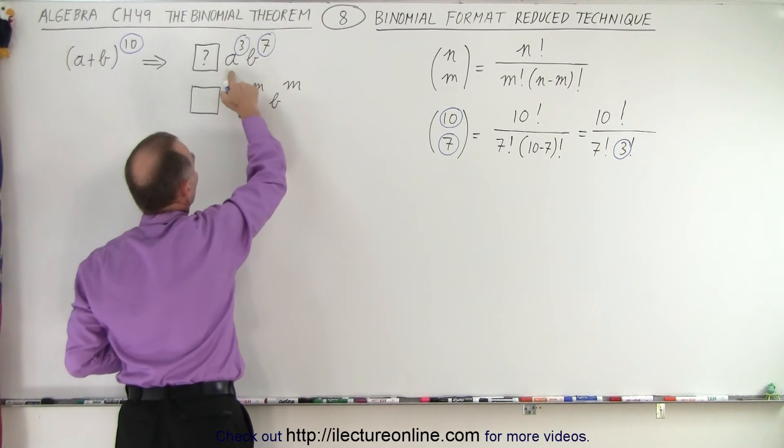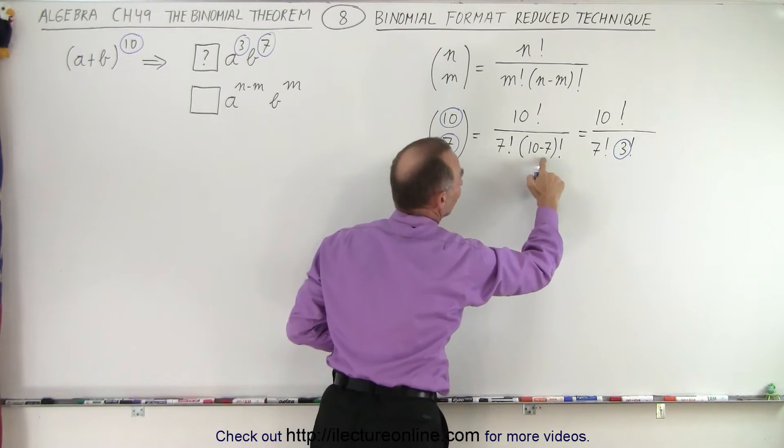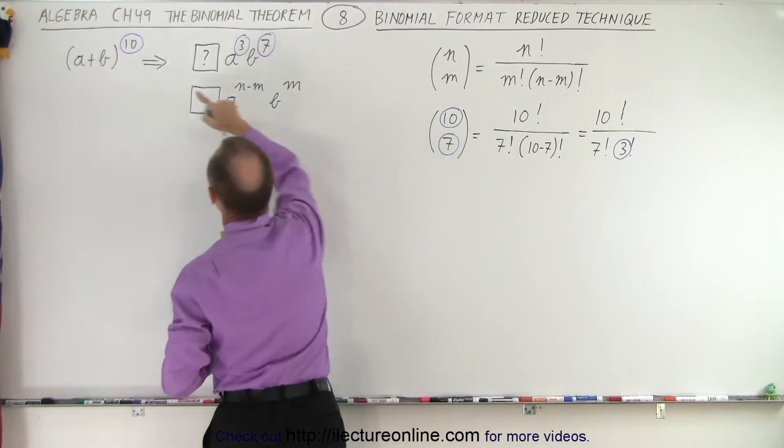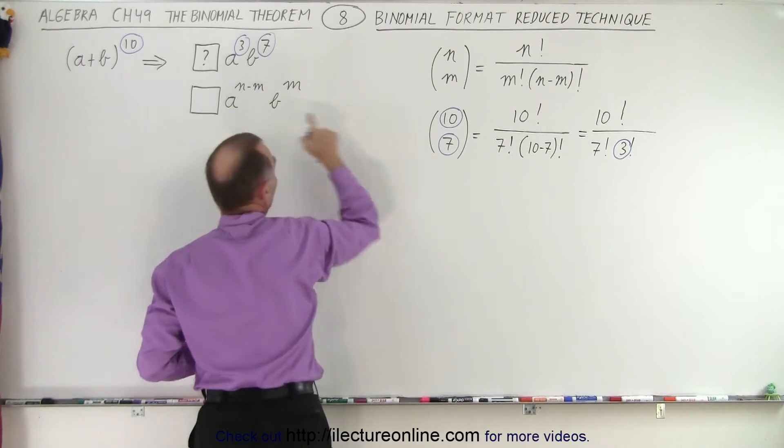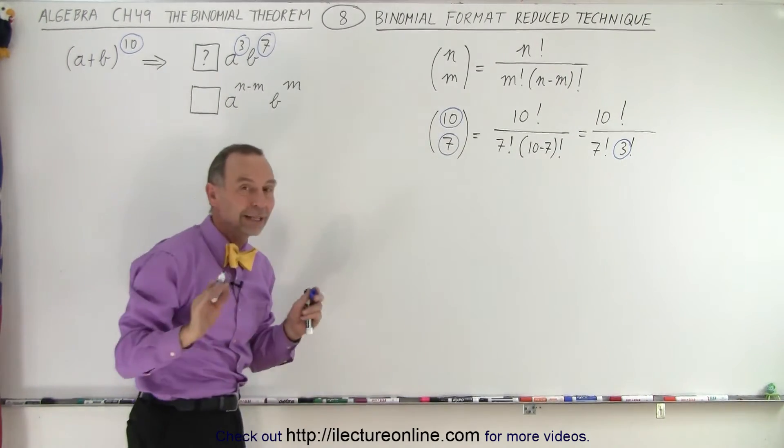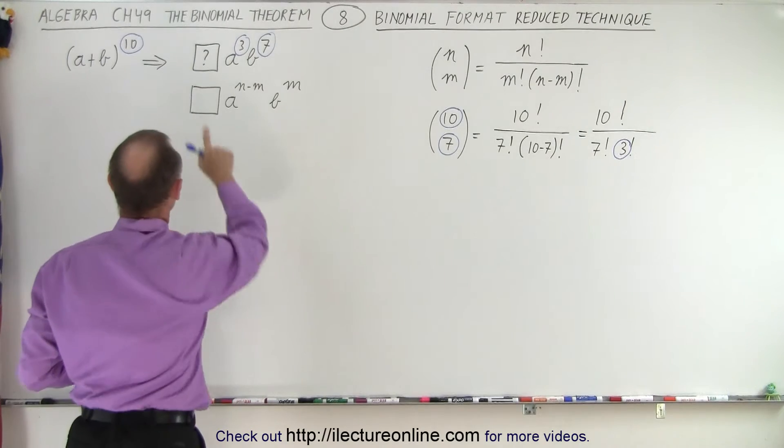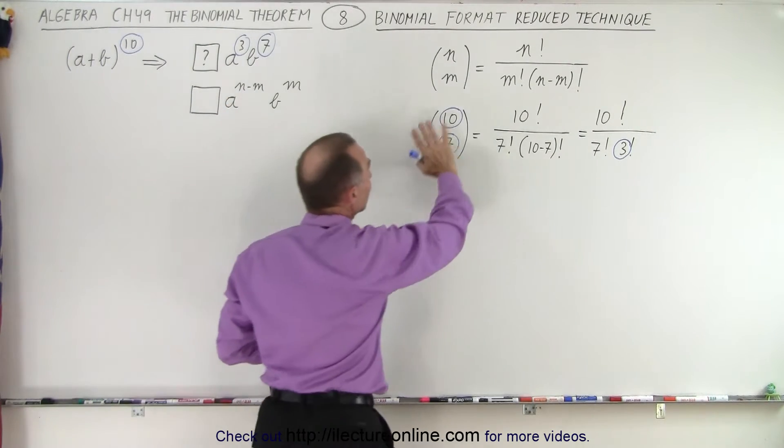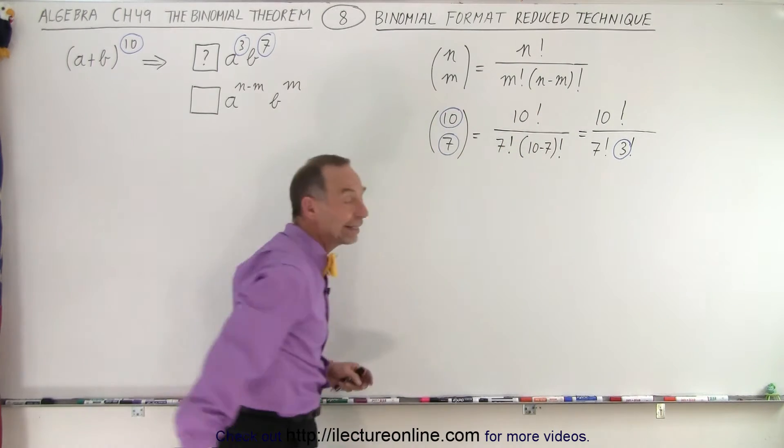So that's where the 3 comes from. So a to the third power, that's 10 minus 7, or 3. b to the seventh power, that's right here. And the exponent a plus b quantity to the 10 power is over there. So that's the relationship between the term that we want to find the numerical coefficient for and the reduced technique of how to find that coefficient.